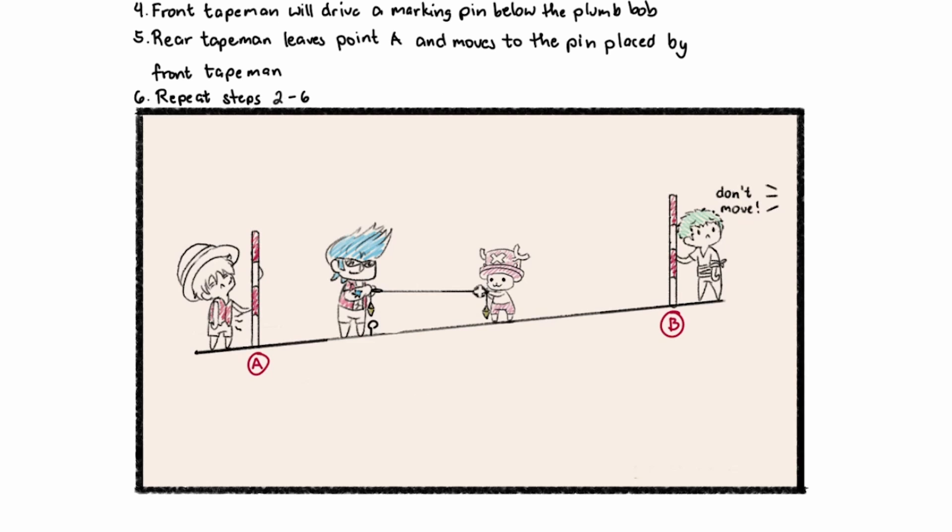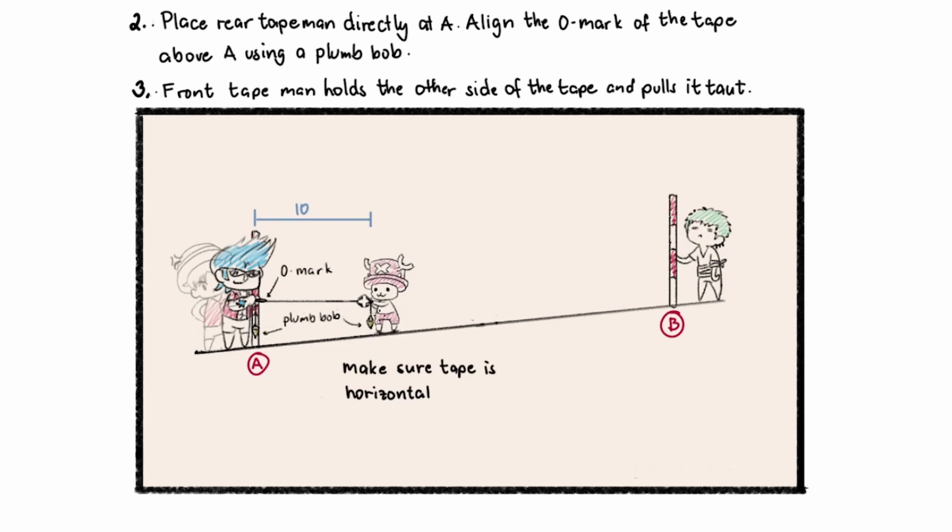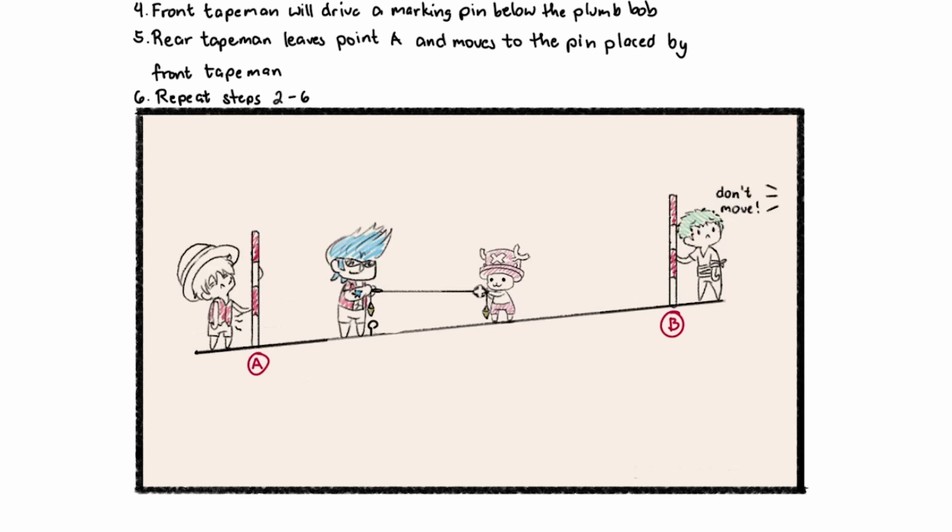So the next step is the front tape man will drive a marking pin below the plumb bob. As mentioned earlier, the front tape man must take note of this point because they will drive a marking pin at that point. Afterwards, the rear tape man will leave point A and move to the pin placed by the front tape man. After aligning themselves to the range poles, the rear tape man now may take the marking pin.